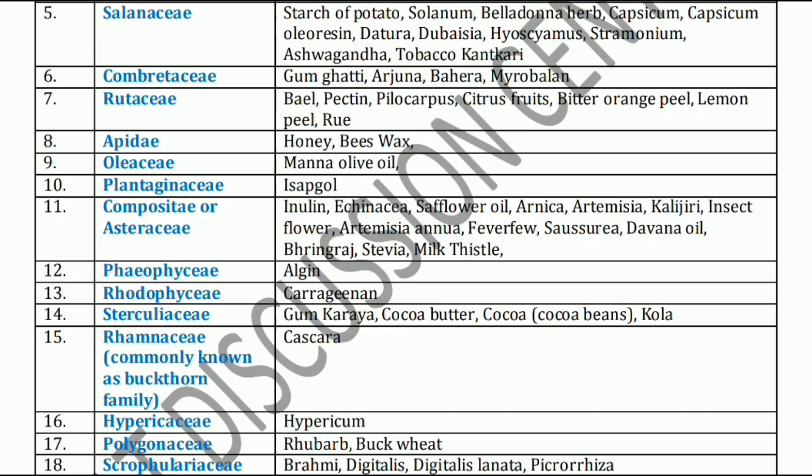Next, Sterculiaceae family. Sterculiaceae family includes Gum karaya, Cocoa butter, Cocoa, and Cola. Next, Rhamnaceae family. Rhamnaceae family includes Cascara and Rhubarb imodi.